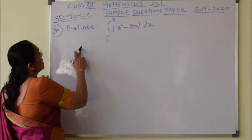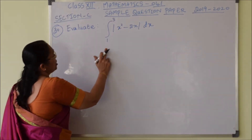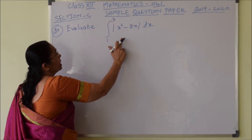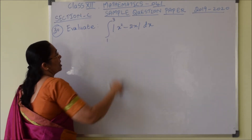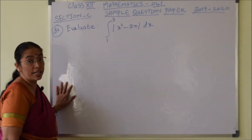Question number 30: Evaluate the integration from 1 to 3 of modulus of x squared minus 2x dx.